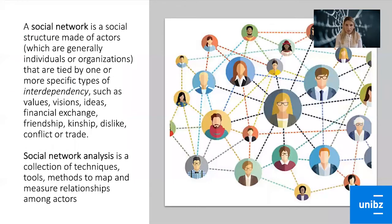A social network is defined as a social structure made of actors, which are generally individuals or organizations, that are tied by one or more specific types of interdependency such as values, visions, ideas, financial exchange, friendship, kinship, dislike, conflict, or trade. It's important to consider that not only positive relationships are part of our network — even conflict and competition are included.